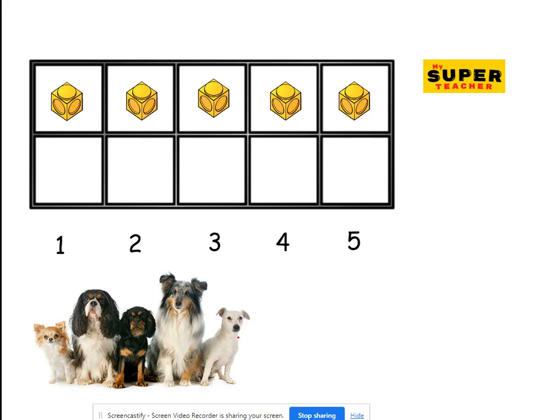Now, how many dogs are here and circle the number that shows how many? Pause the video and count. Okay, one, two, three, four, five cute dogs. Now I'm going to circle five, this is five. Well done.